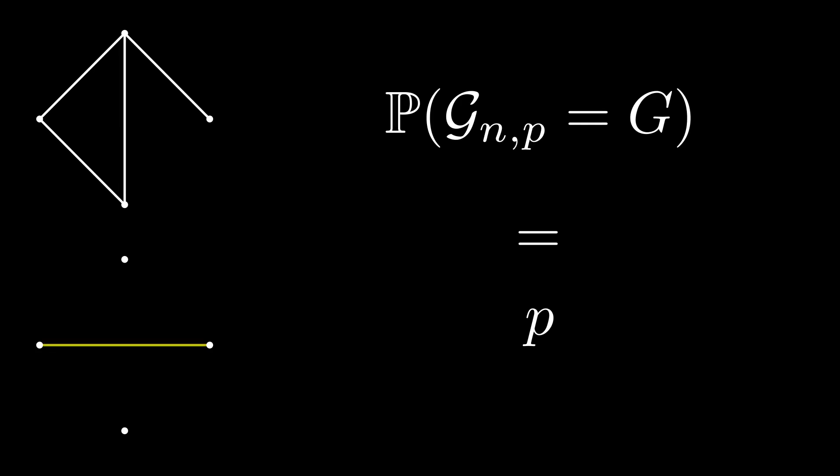For general p, let us calculate what the probability of getting each graph is. Consider, for example, this graph for n equals 4. We will calculate, as a function of p, of course, the probability that G_{n,p} is equal to this graph. So for it to happen, we need this edge to appear in G_{n,p}. This event, that this edge appears, happens with probability p, so we should add a factor of p. This edge, however, should not appear in G_{n,p}, and this event has probability 1 minus p, so we add a factor of 1 minus p. And this one should not appear either, so we multiply again by 1 minus p. This one needs to appear, and this happens with probability p, so we add a factor of p. This one also adds a factor of p, since it appears in g, as well as this one. So we end up with the following formula.